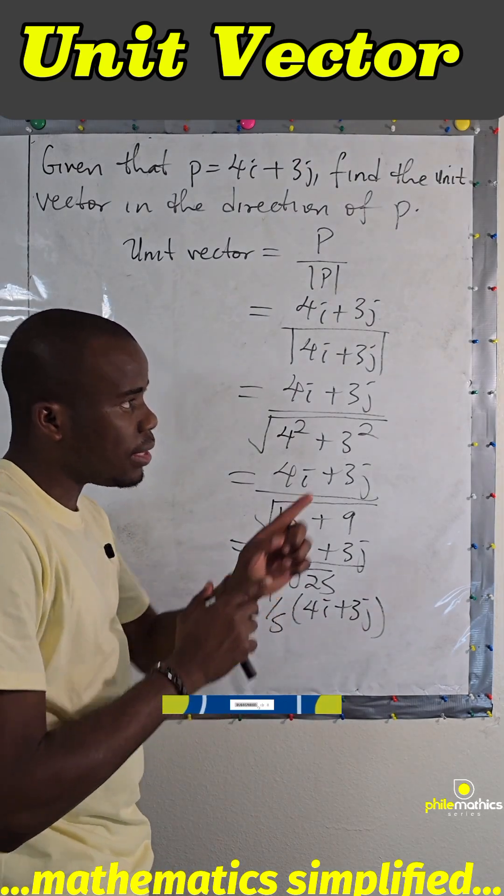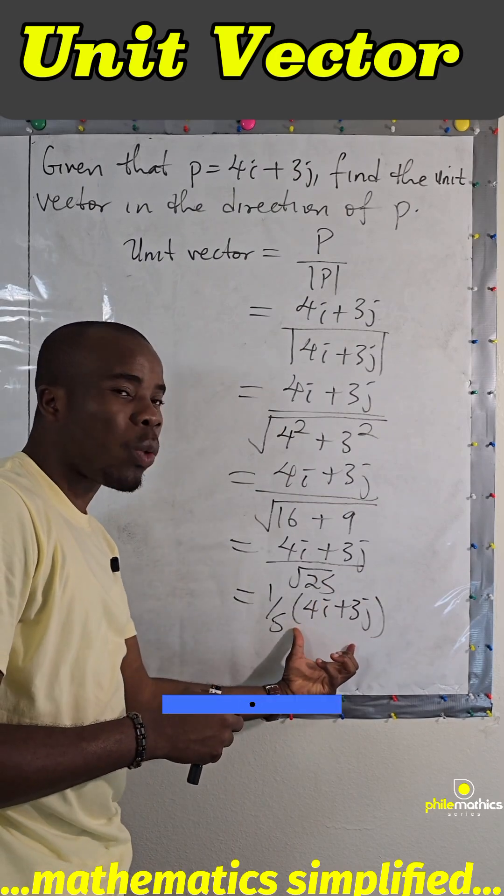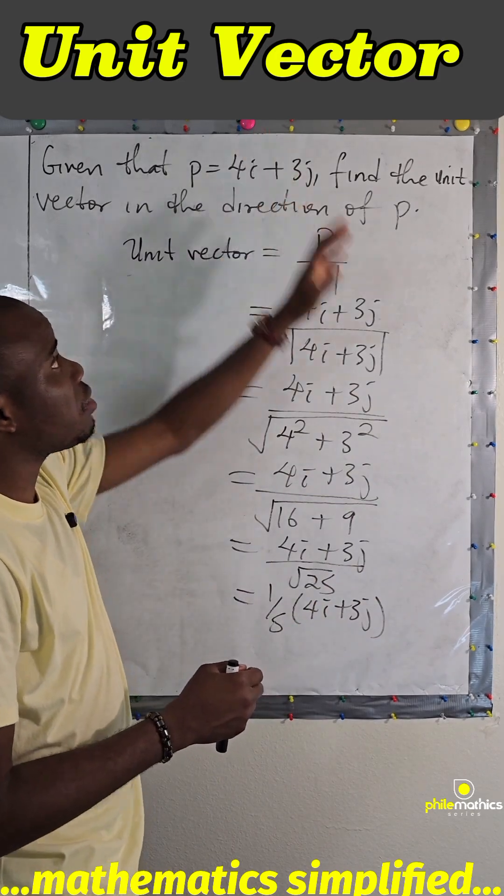So this vector will point in the same direction with p, only that the length of this is 1 and the length of this is, let's say, 5.